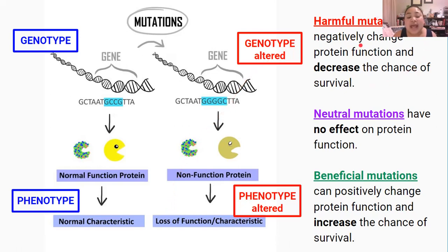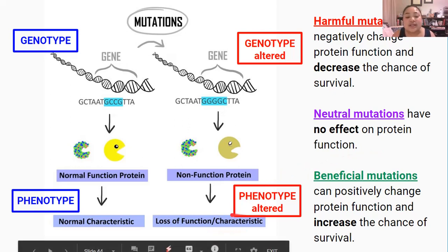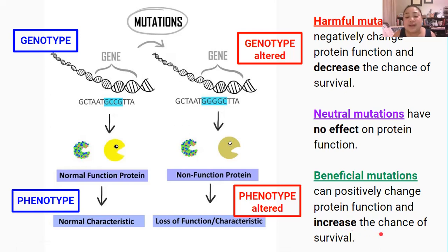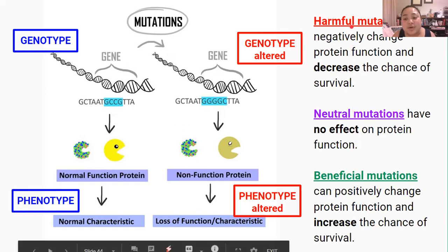Many harmful mutations can actually turn into cancers. It's also important to know that not all of the DNA codes for a gene. If mutations happen in this non-coding part of the DNA, then mutations can be neutral or have no effect on protein function, and therefore no effect on the characteristic or phenotype. And on very rare occasions, mutations are beneficial and may actually increase the chance of an individual surviving and reproducing. But remember this is very, very rare, as most mutations tend to be harmful or have no effect on the phenotype.